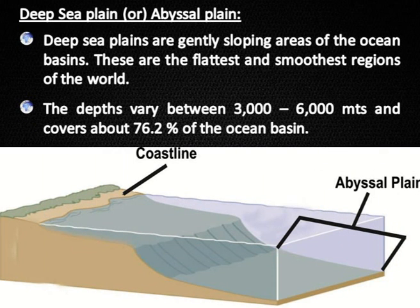Deep Sea Plain or Abyssal Plain: Deep sea plains are gently sloping areas of the ocean basins. These are the flattest and smoothest regions of the world. The depths vary between 3,000 to 6,000 meters and they cover about 76.2% of the ocean basin.